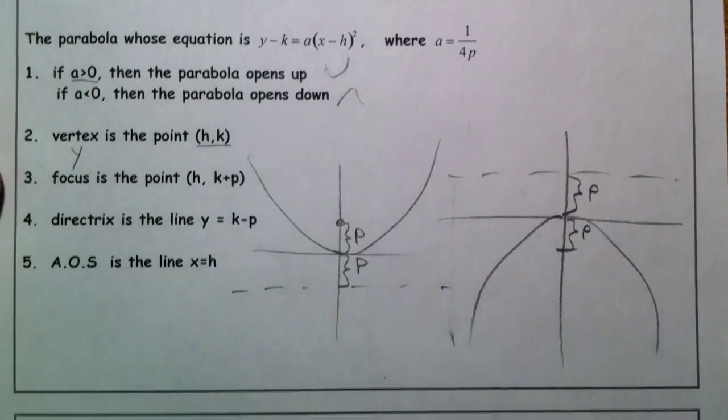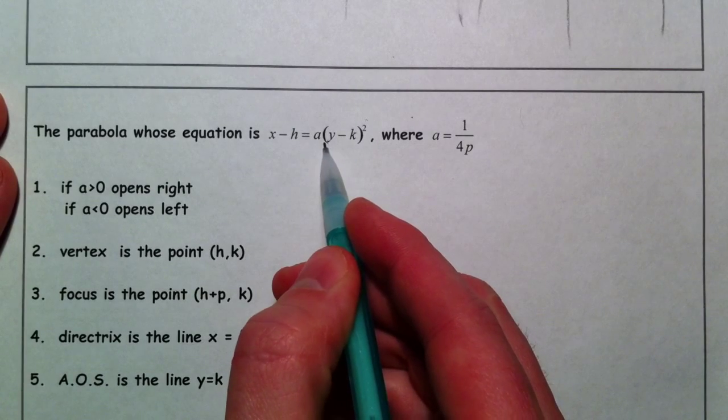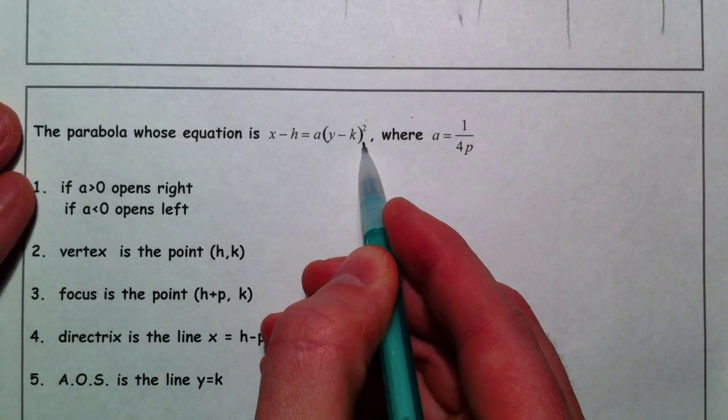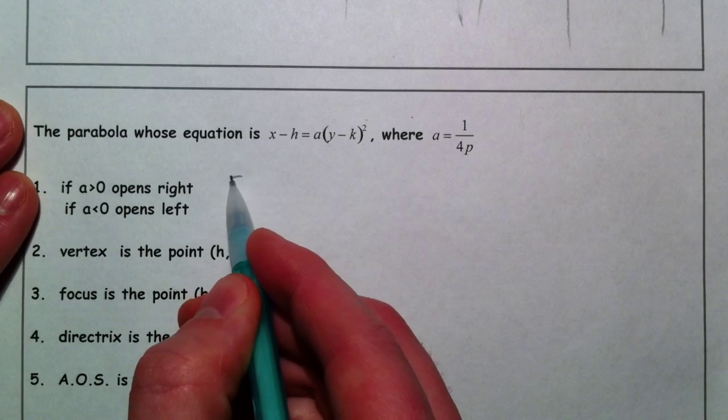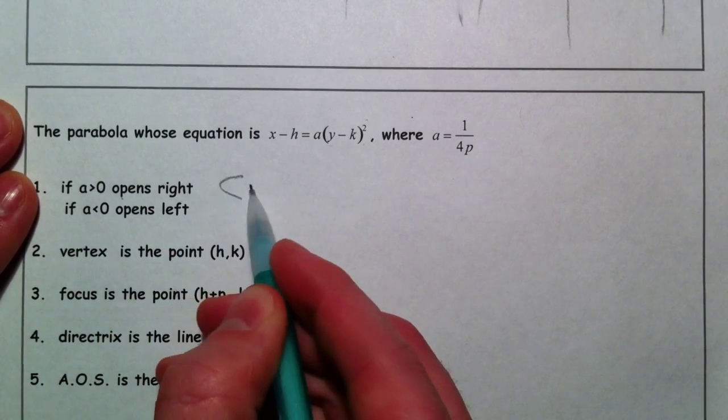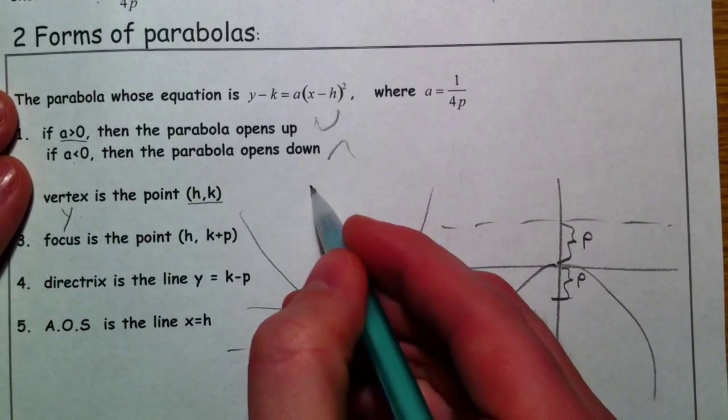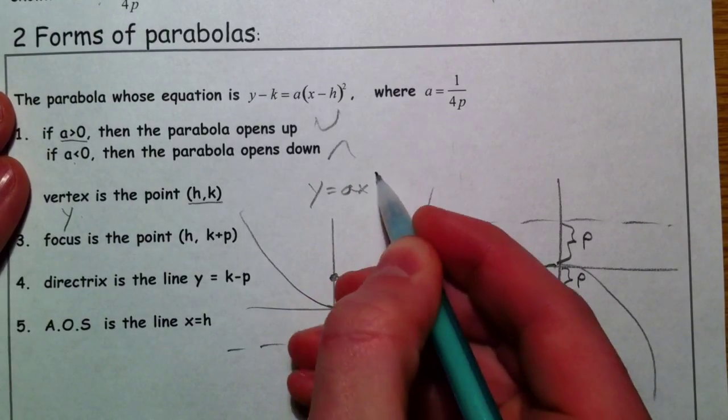The one thing we're going to add to this is that you can change it so that the y is squared. If y is squared, it can open to the right. If a is positive, it's going to open to the positive side. Positive x's are to the right, and it can open to the left. So this is the y equals ax squared equation.